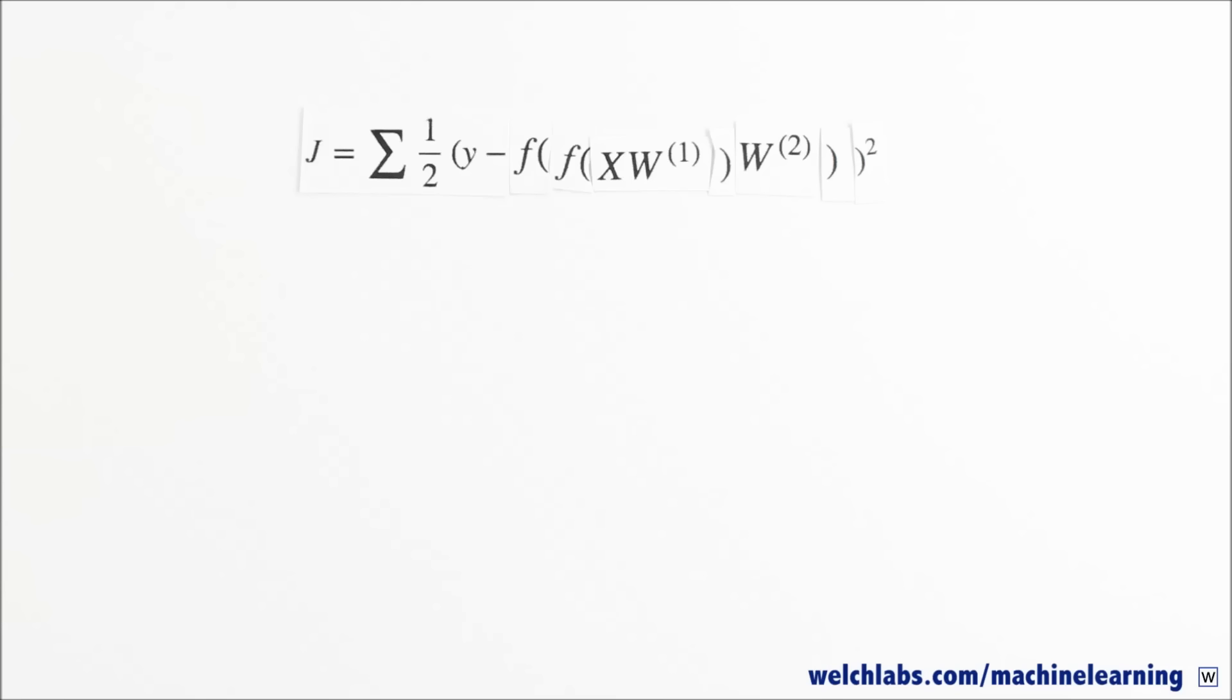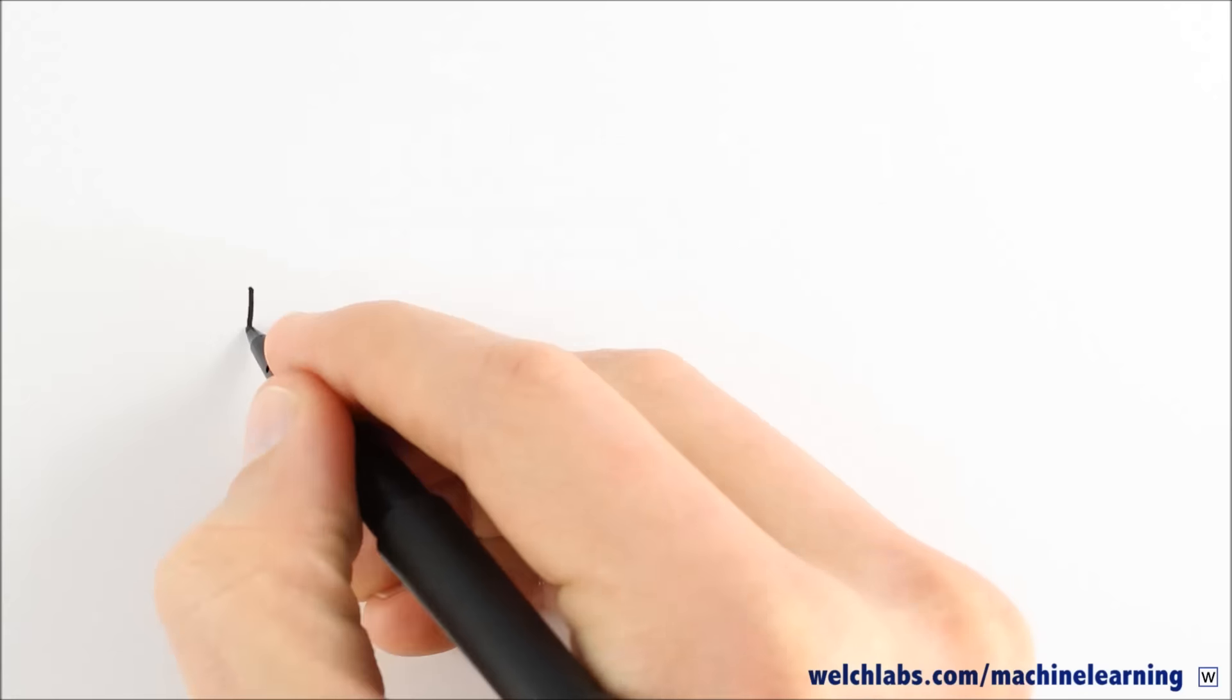We want to know which way is downhill. That is, what is the rate of change of j with respect to w, also known as the derivative. And in this case, since we're just considering one weight at a time, this is a partial derivative. We can derive an expression for djdw that will give us the rate of change of j with respect to w for any value of w.